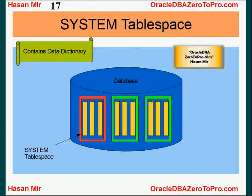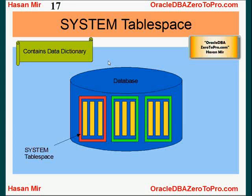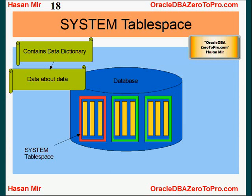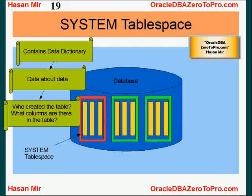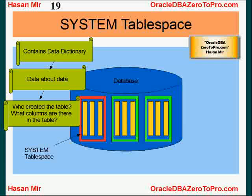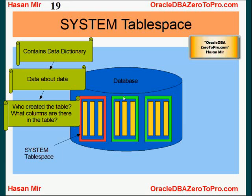Let's talk about the system tablespace. The system tablespace is mandatory — it has to be online all the time. It contains something very important: the data dictionary. The data dictionary is metadata — data about data. For example, when you create a table, the table definition is stored there: who created it, when it was created, what columns exist. If you create a PL/SQL procedure, the procedure name, who created it, and what code executes is all stored as metadata. The data dictionary always resides in the system tablespace.